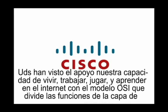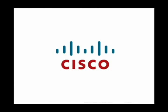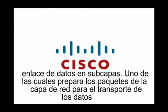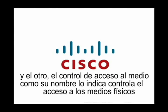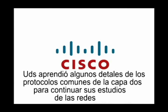To support our ability to live, work, play, and learn over the internet, the OSI model divides the functions of the data link layer into sub-layers. The LLC prepares network layer packets for transmission, and the Media Access Control sub-layer, as the name suggests, controls access to the physical media. You will learn details of some common layer 2 protocols as you continue your studies of networking.